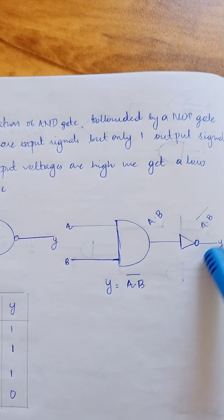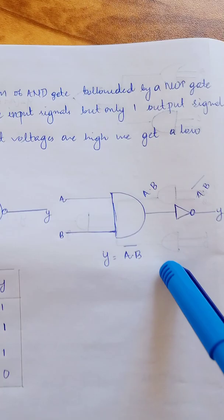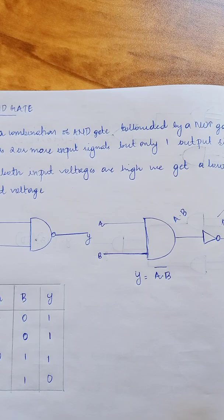It has two or more input voltages but only one output voltage. This is the Boolean equation of the NAND gate: Y equals A dot B whole bar. When both input voltages are high, we get a low output voltage.